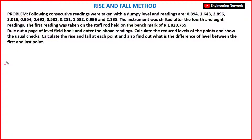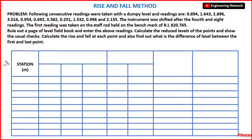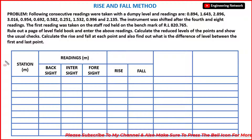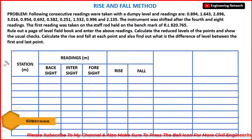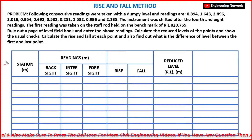Now let me draw a table. The first column is station, then readings — which has sub-columns for back sight, intermediate sight, and fore sight — then rise, then fall, then reduced level, and finally the remarks column. This is the level field book.